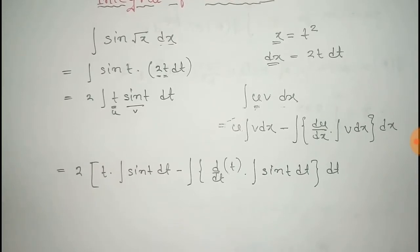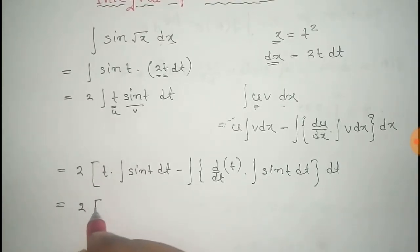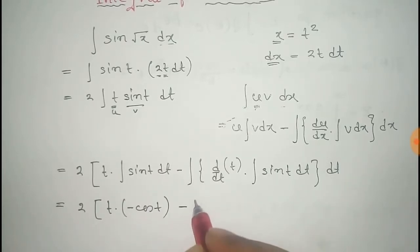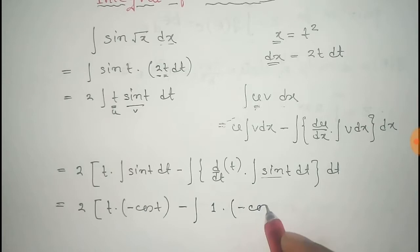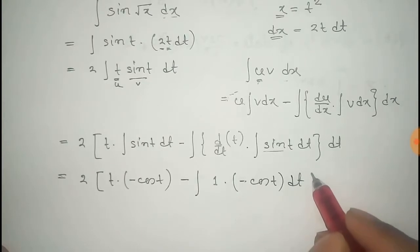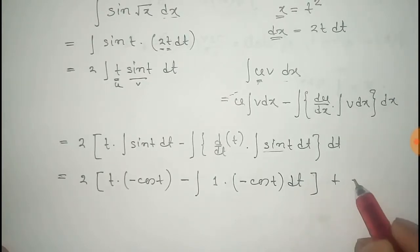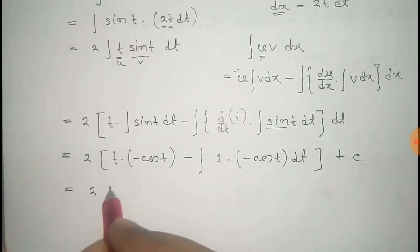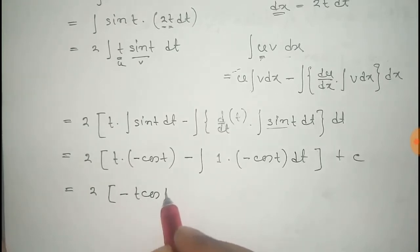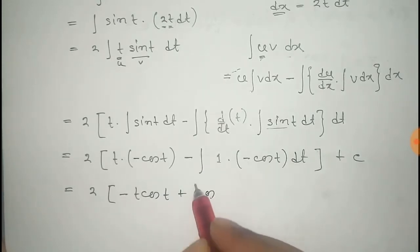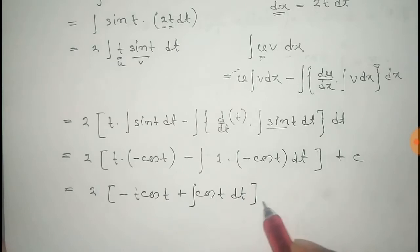That is equal to 2 times [t into (−cos t), minus the integral of 1 times (−cos t) dt], plus a constant. The derivative of t with respect to t is 1, and the integral of sin(t) is −cos(t). So this becomes 2 times [−t·cos(t) plus the integral of cos(t) dt], plus C.